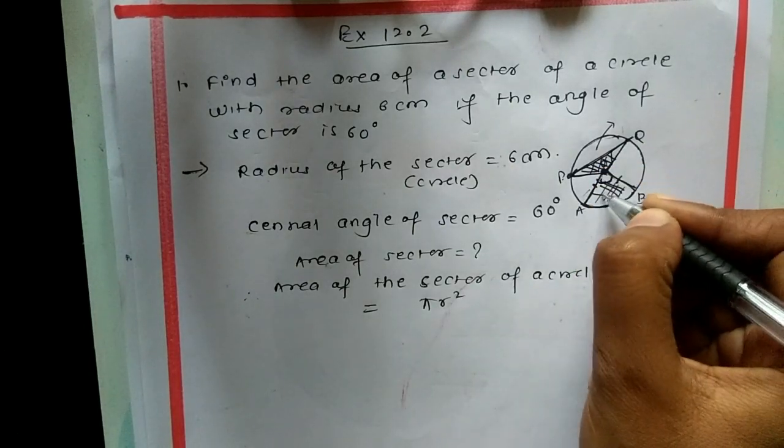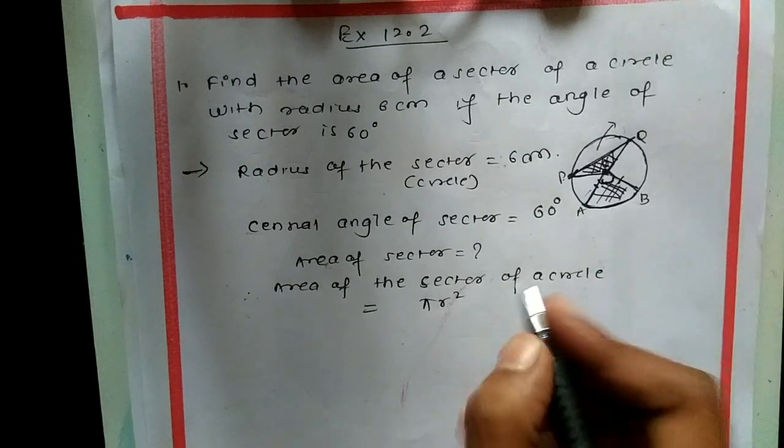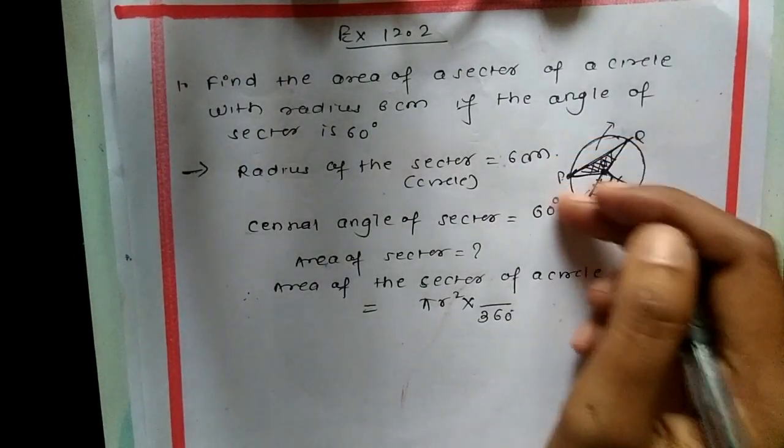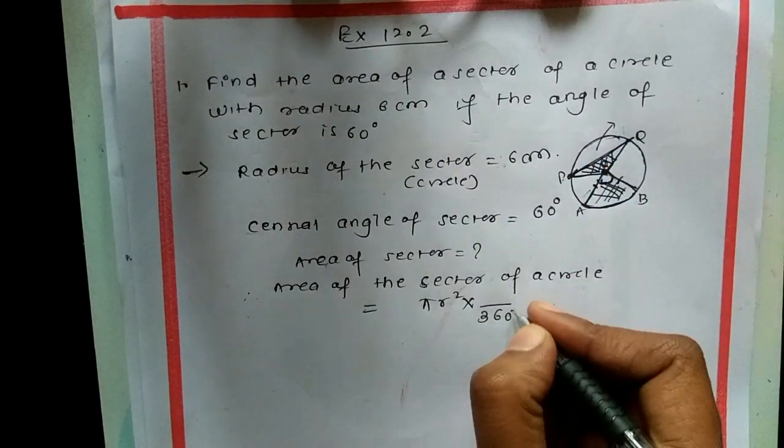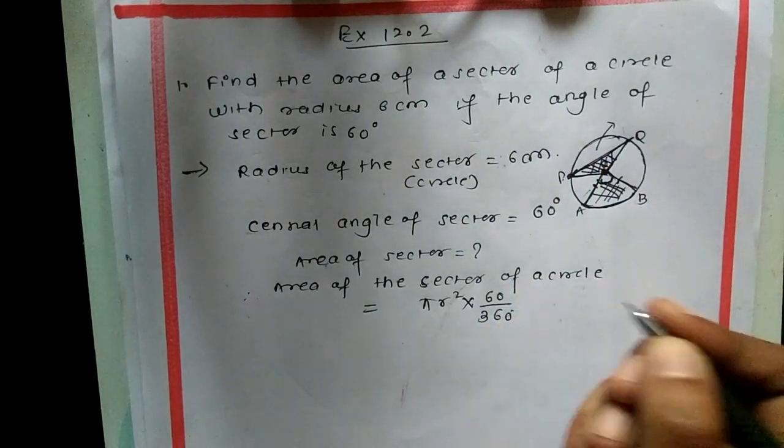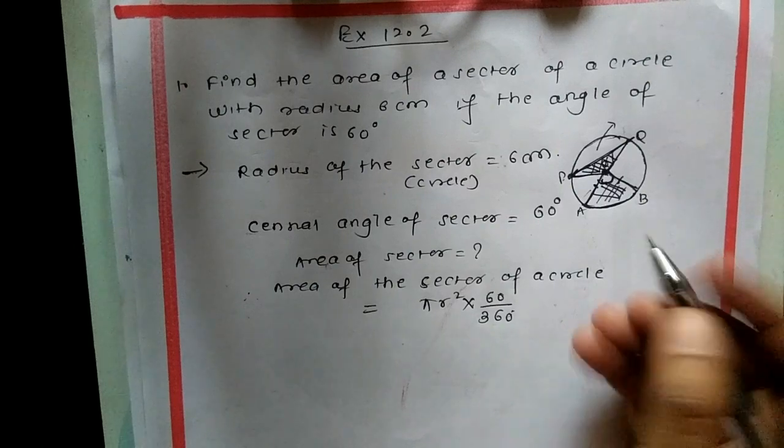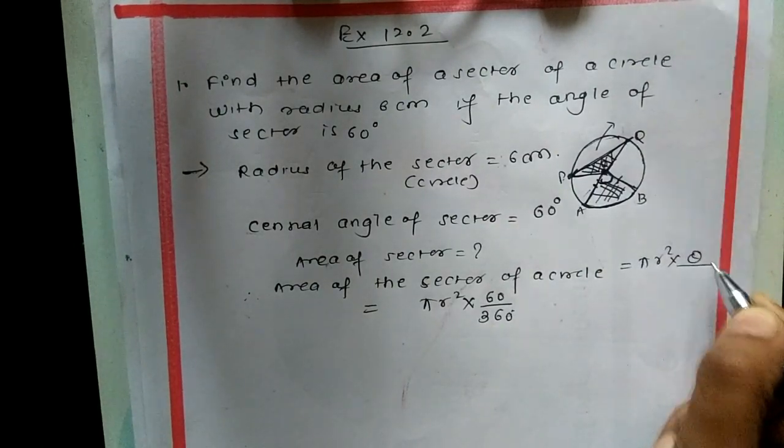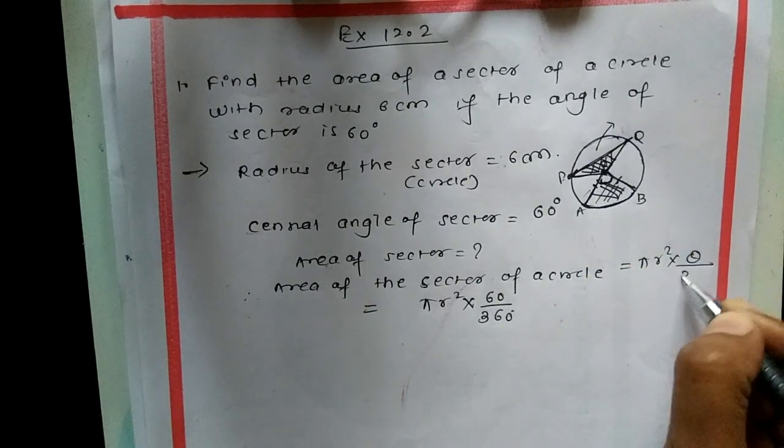Out of 360 degrees total, how much is the angle? The formula is πr² × θ/360, where θ is the angle of sector. Here we have 60 degrees.